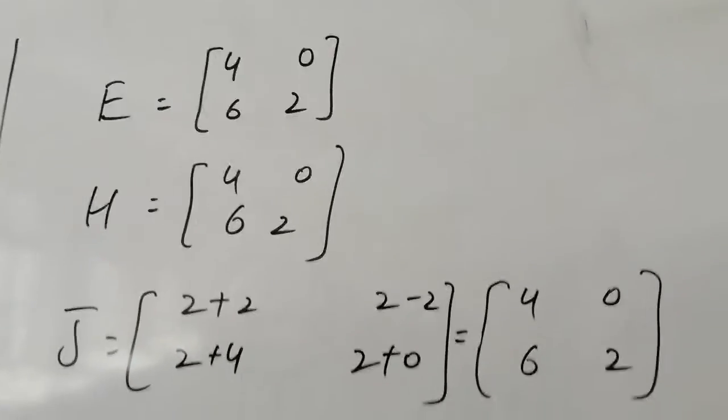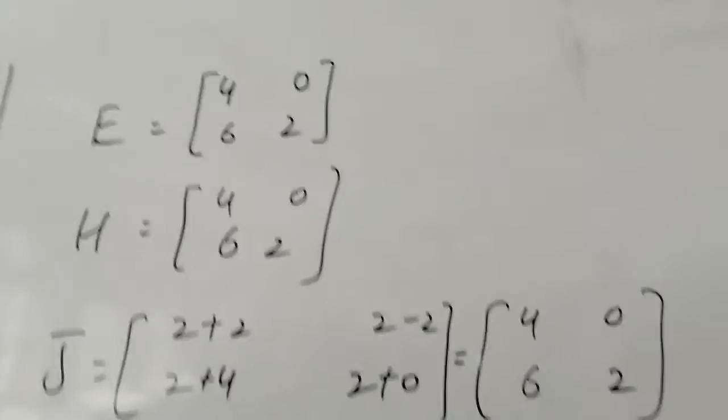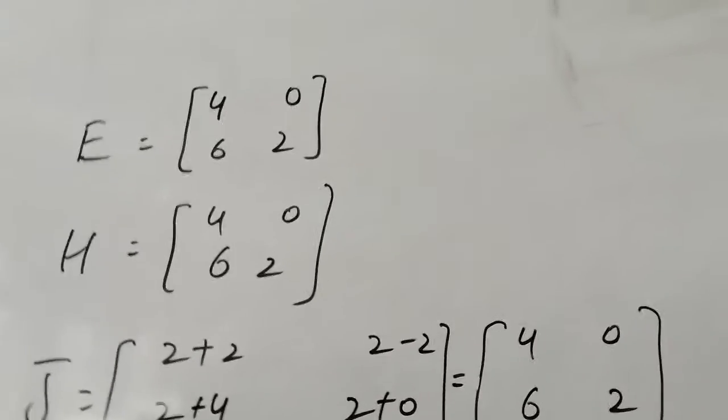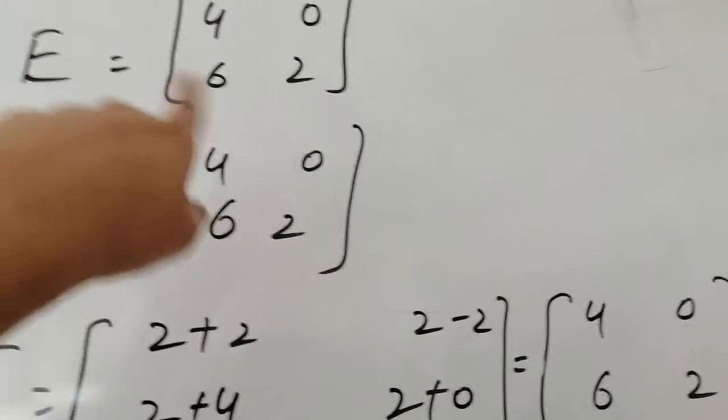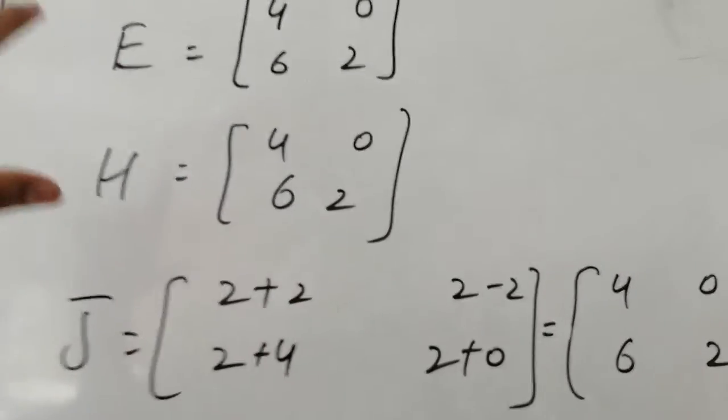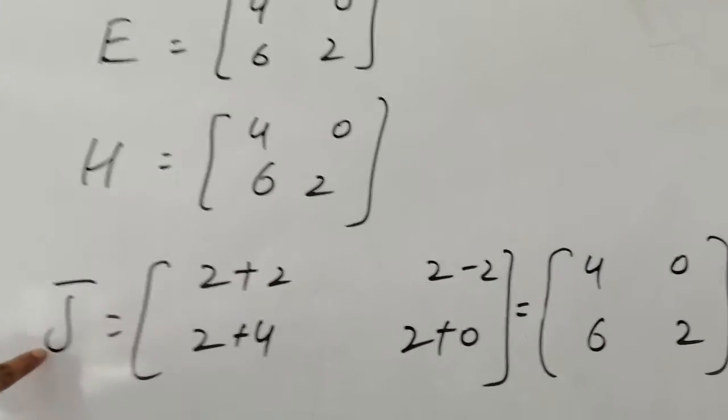After that, we have matrices given E, H and J. Now you can see all the orders are the same. It was 2 by 2. There were 2 rows and 2 columns. So E, H and J, the three orders are the same.